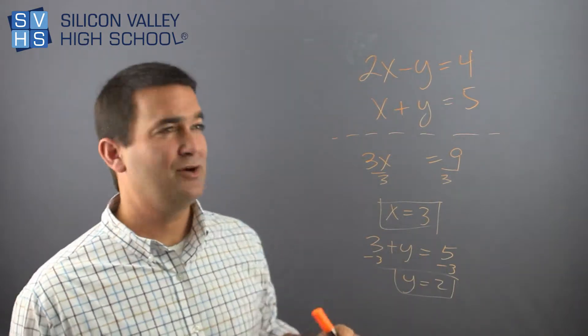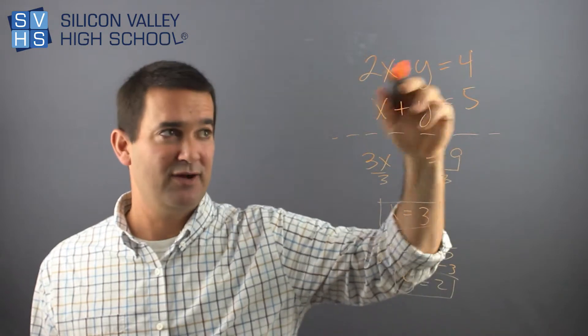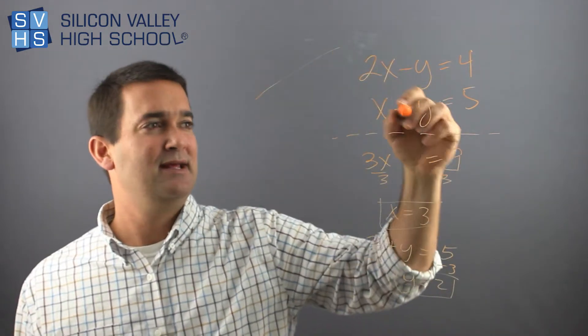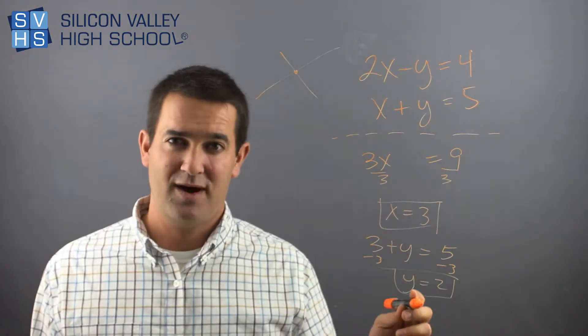And remember, so basically, these are called systems of equations. These are basically two lines. If I graph these out, it would be like a line and the other line. They would cross at a point, which is why we got an X and a Y.